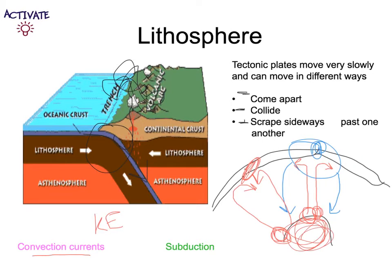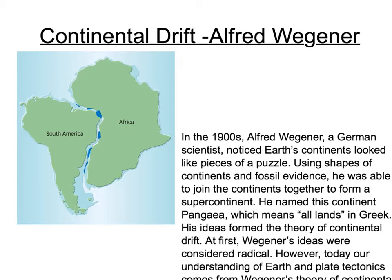The heat from the core is thought to be generated by radioactive decay. Now we come on to continental drift theory, which was first proposed by Alfred Wegener. What he noticed was that when he looked at a map, the continents looked like pieces of a jigsaw puzzle. When he put them all together, it formed a massive supercontinent which he called Pangaea.